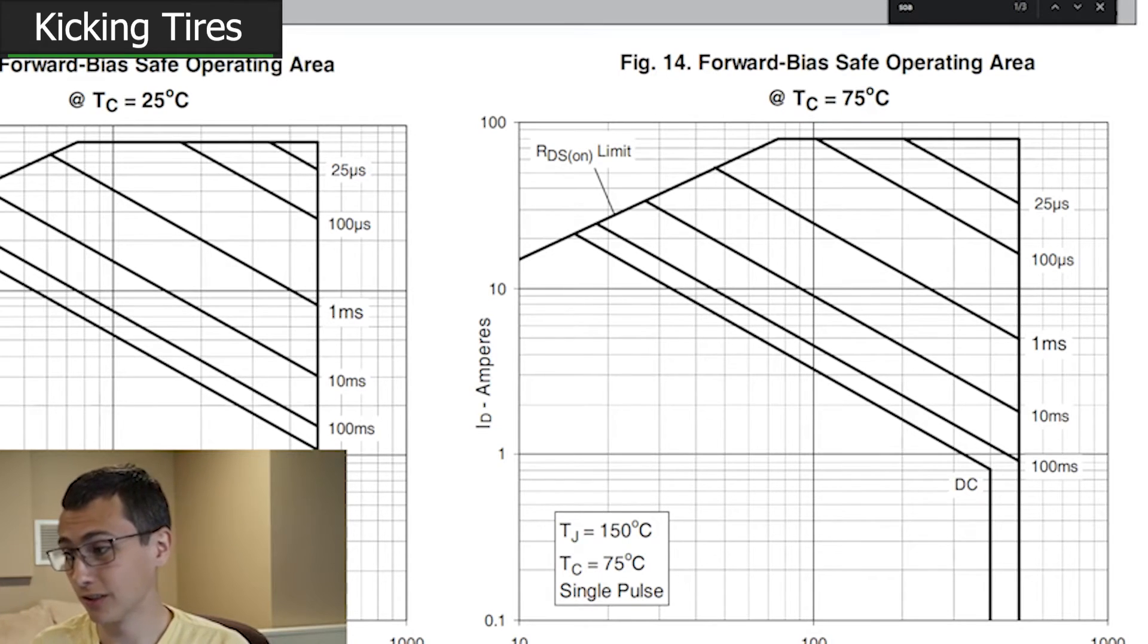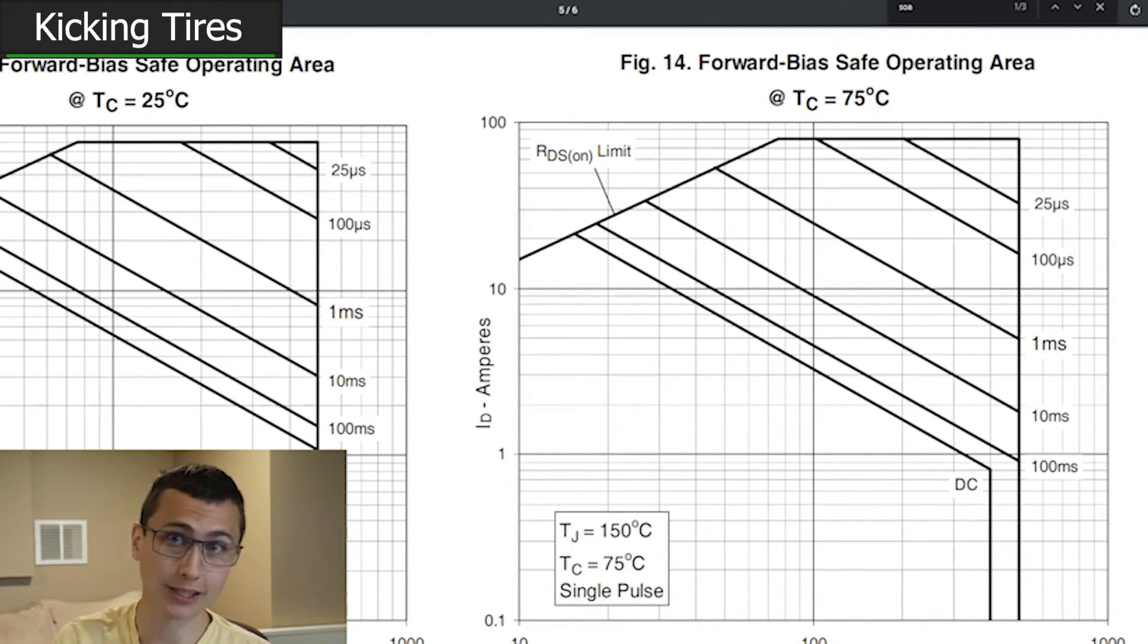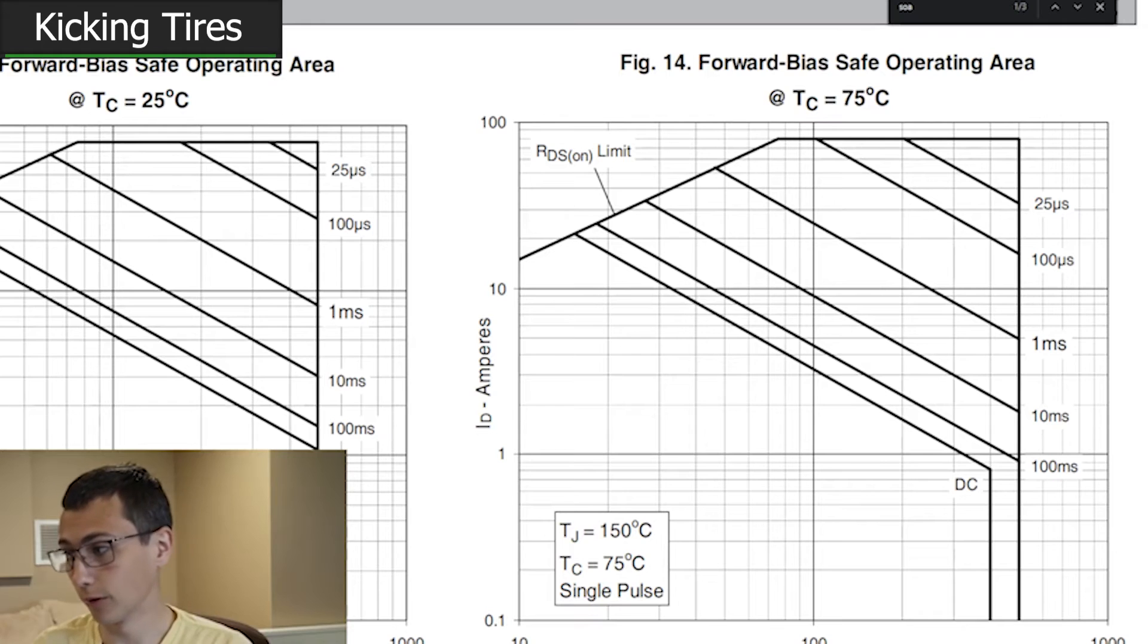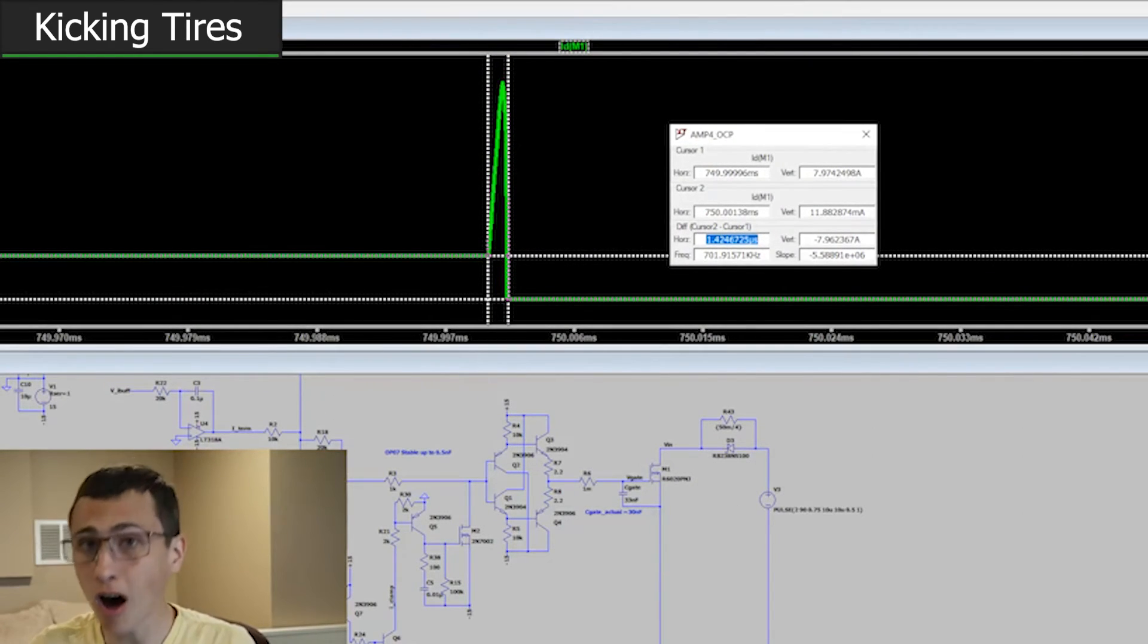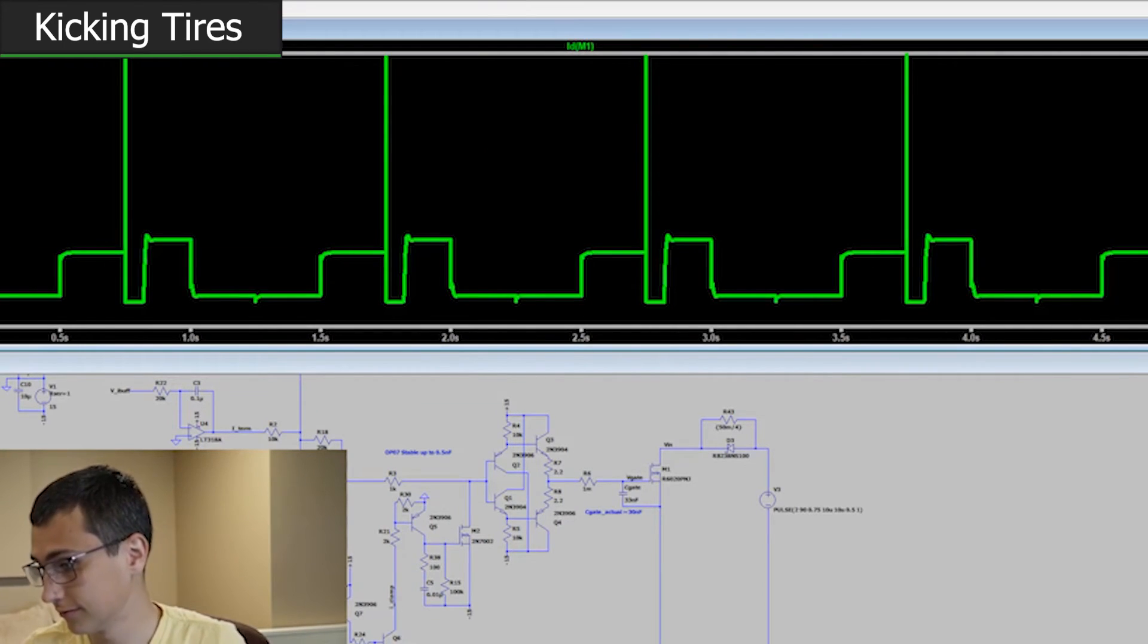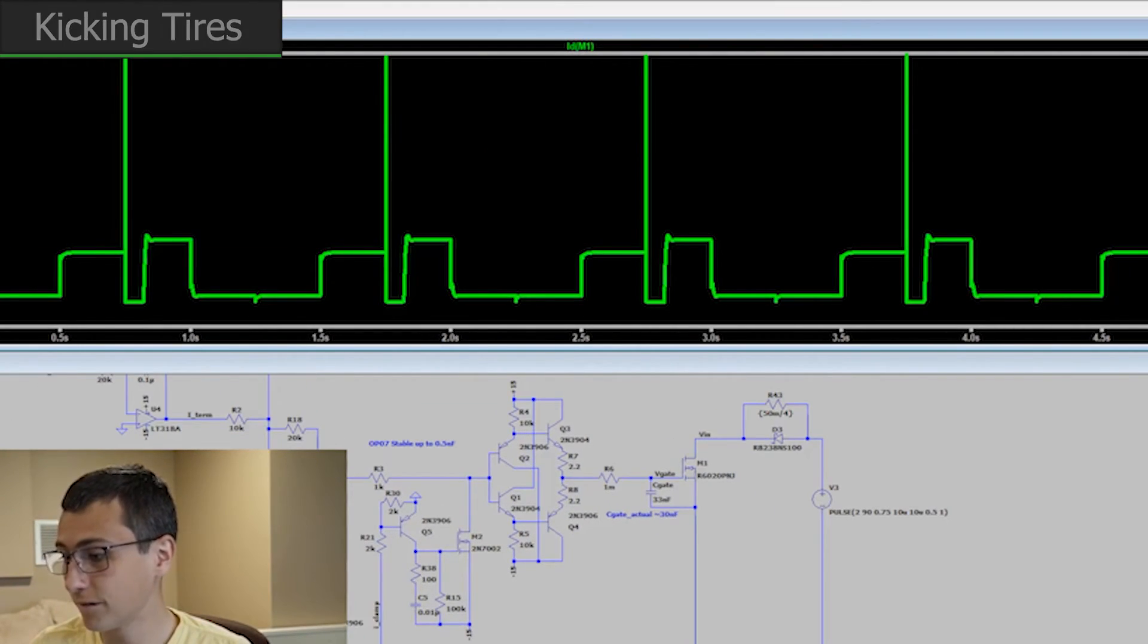For as long as we need it to hold that off, we can reprogram that restart interval to prevent it from building up too much heat and blowing up our part. So that overcurrent protection, as long as the overvoltage protection is also working, should keep our part within the safe operating area limit with a ton of margin. That is phenomenal.